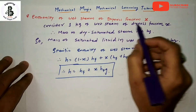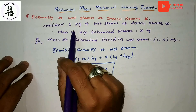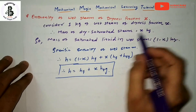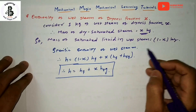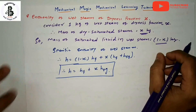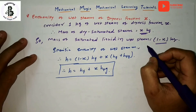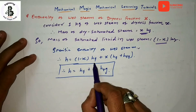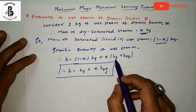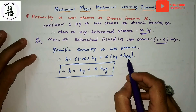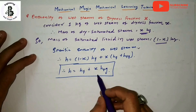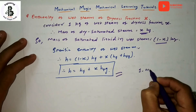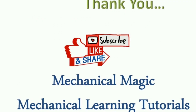For the enthalpy of wet steam with dryness fraction x: considering one kg of wet steam with dryness fraction x, the mass of dry saturated steam = x kg and the mass of saturated liquid = (1 − x) kg. The specific enthalpy h = (1 − x) × hf + x × (hf + hfg), which simplifies to h = hf + x·hfg. This formula is important for one-mark examination questions. If you liked it, please subscribe and share Mechanical Magic - Mechanical Learning Tutorials.